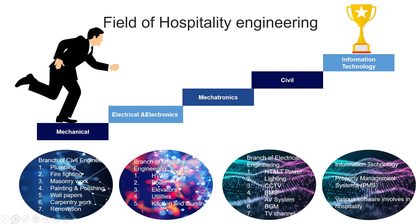Branch of Civil Engineering: Plumbing, Firefighting, Masonry work, Painting and Polishing, Wallpapers, Carpentry work, and Renovation. Civil Engineering dominates in the project management area, since 70% of project costs are related to civil materials, and MEP cost is only 30% in all hotel projects. Information Technology: Property Management System, which we call PMS. Various software is involved in hospitality IT, which is fast-paced in the hospitality industry.